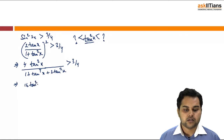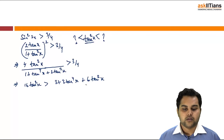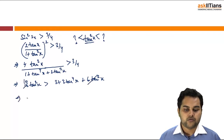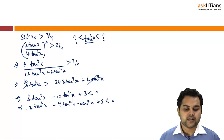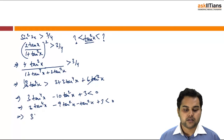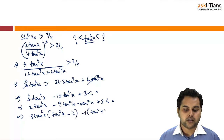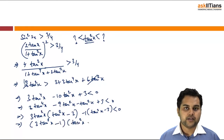Expanding, I get 16tan²x > 3 + 3tan⁴x + 6tan²x. This simplifies to give 3tan⁴x - 10tan²x + 3 < 0. Factoring: 3tan⁴x - 9tan²x - tan²x + 3 < 0, then taking 3tan²x common gives (3tan²x - 1)(tan²x - 3) < 0.